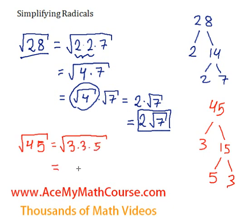So 45 is 3 times 3 times 5. And every time that we have a pair of numbers, we can make a perfect square with it. 3 times 3 is 9.